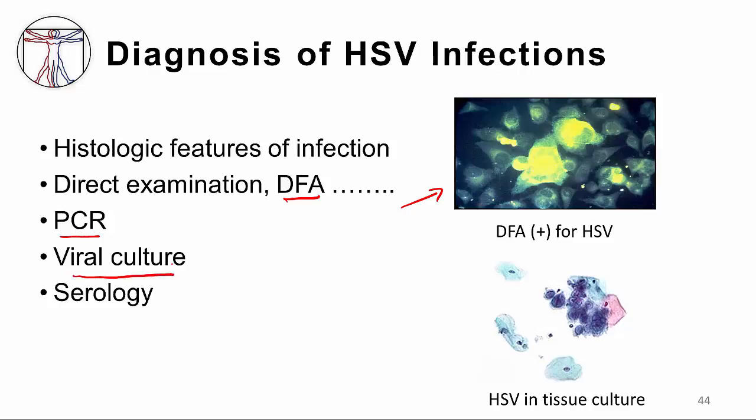Viral culture is another way to diagnose herpes infections. The suspected infected specimen, whether it's vesicular fluid or a brain biopsy, is sent to the virology laboratory and put on tissue cultures which support the growth of herpes viruses. The tissue culture is subsequently examined for evidence of herpes simplex virus. Finally, you can also diagnose herpes infections by using serology, looking for antibody directed against HSV-1 and HSV-2.